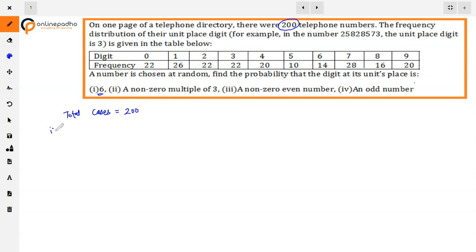In the first part, we are asked about unit digit 6. If we use 6, then there are 14 numbers in which the digit is 6. So the number of favorable cases is 14, and the required probability is favorable cases divided by total cases: 14/200, which equals 7/100, or 0.07.